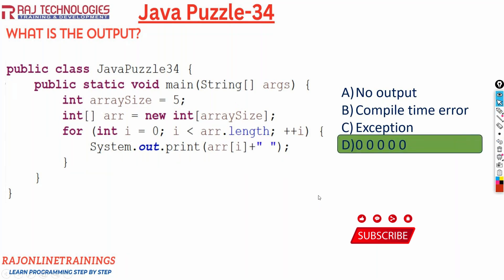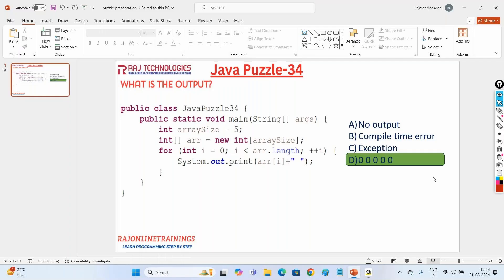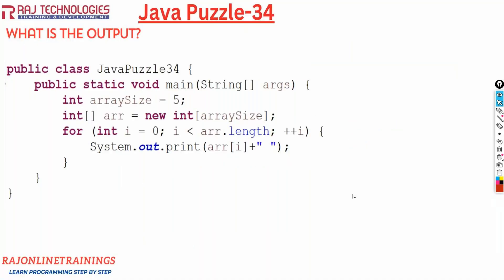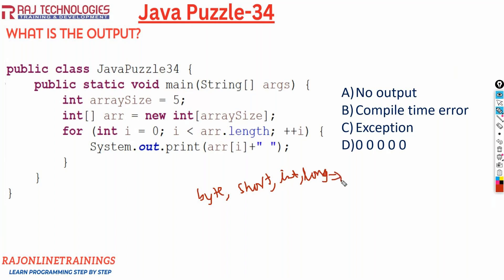So the main concept is since arrays come under reference type, when you are allocating memory for array, once the memory is allocated for array, the values what it contains by default is default values. So for integer, the default value is zero, for all integral types. So what are the integral types we are having? We are having totally five integral types: byte, short, int, long. For these four integral types, the default value is zero.